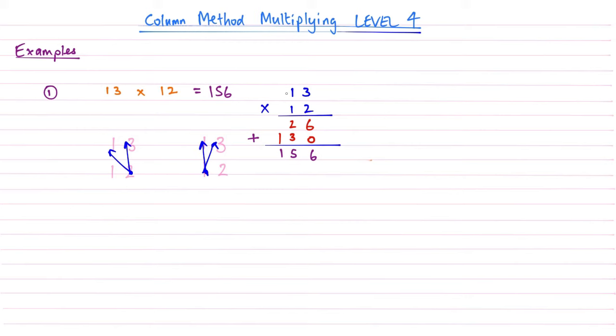So we do 1 times, add your 0 first, then we're going to do 1 times 3, which is 3, then we're going to do 1 times 1, which is 1, and write that there. So you're moving across. And that gives me an answer as 156.